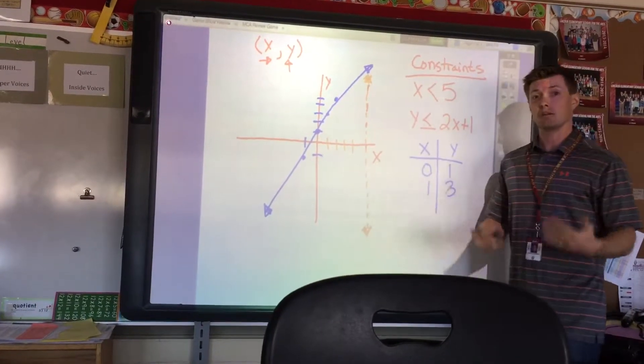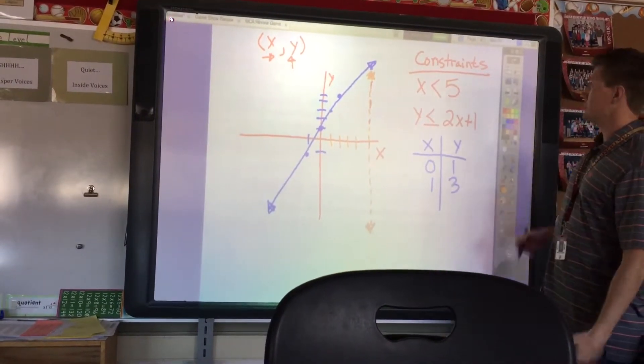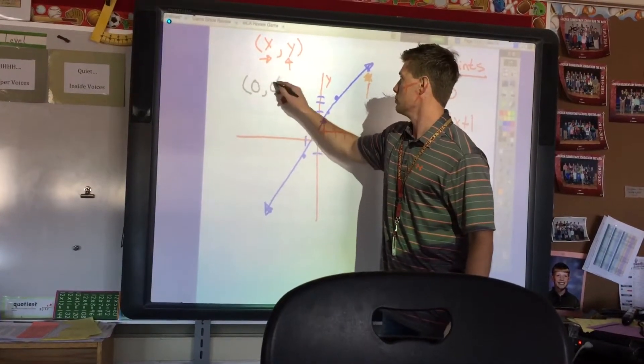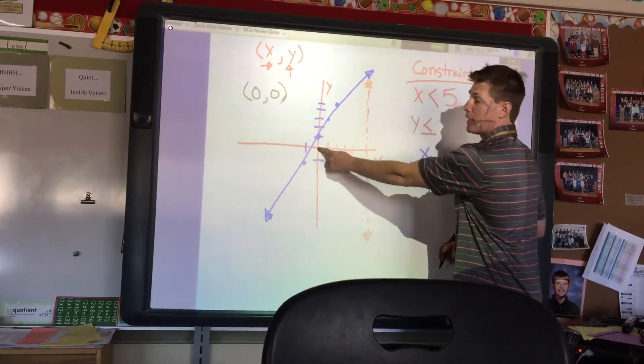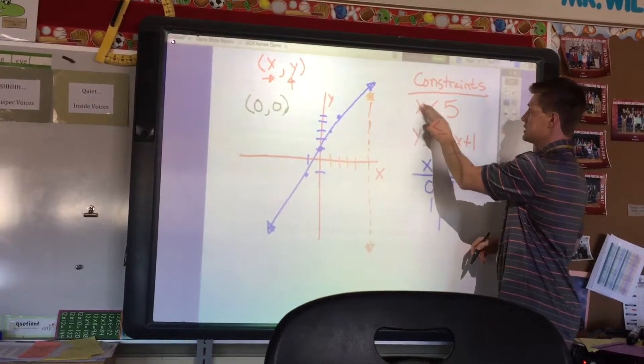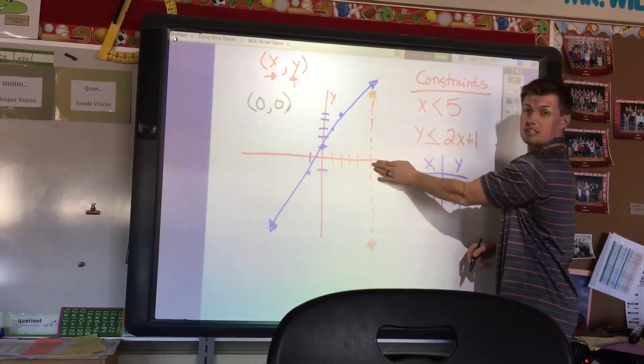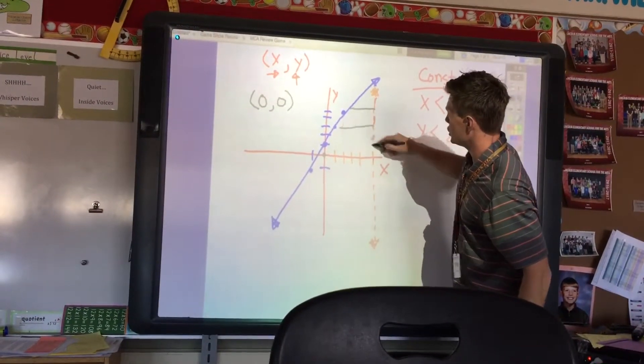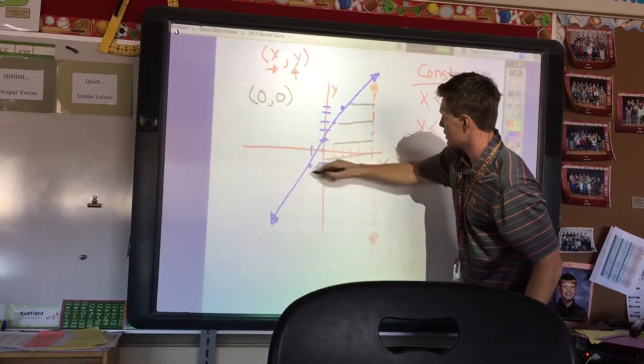Now, I have to determine how to shade. And by shading, I'm going to choose a point. So if I choose a point here, I'm just going to choose 0, 0, which is our origin. And I'm going to test it. So if x is 0, is 0 less than 5? That is true. I'm going to shade near the origin. So I'm shading anything this way.